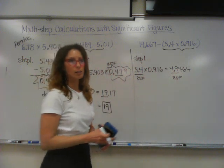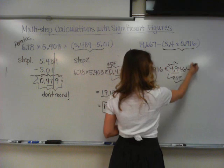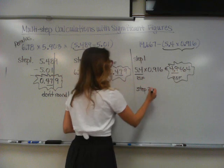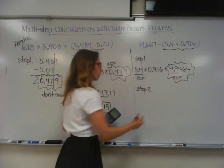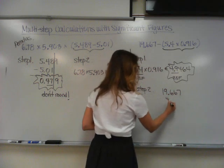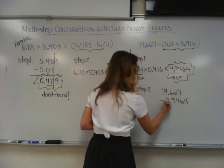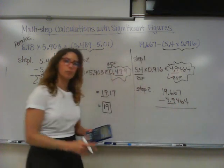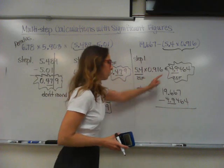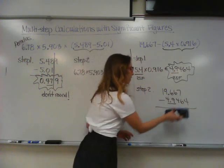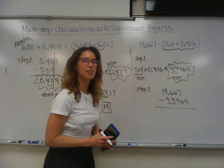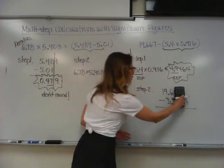Am I allowed to round yet? No. So we're going to use all of this when we go into step number two. Now we're subtracting. Line up your decimals: 19.667 minus 4.9464. Leave the 4.9 underlined — that reminds you how many significant figures you had when you performed that operation. Where should I draw my line if technically the 4.9464 is only going up to here? You should draw your line there.